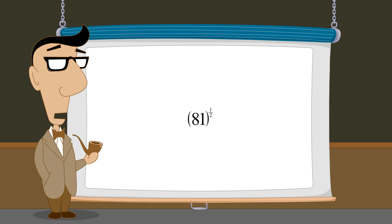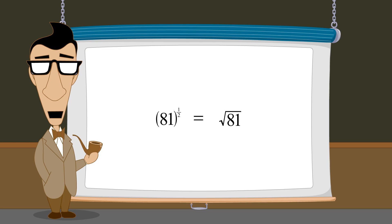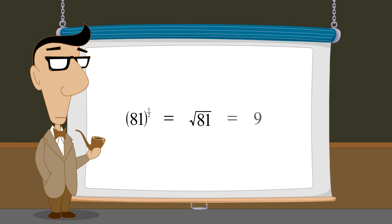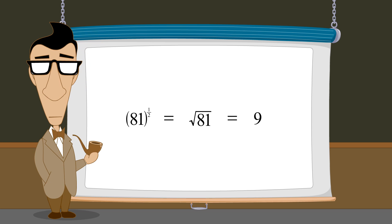So we have seen that roots can be written as exponential expressions using rational exponents, or as radical expressions using a radical sign. We have also seen that these expressions can be simply written as an integer, if they are perfect roots. In the next lecture, we will see that these expressions can sometimes be simplified, even when they are not perfect roots.